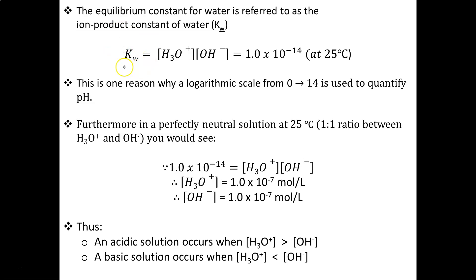Because water is so important to us, we give it its own variable, Kw, known as the ion product constant of water. Its value at 25 degrees Celsius — room temperature — is 1.0 times 10 to the power of negative 14, and this is one of the reasons why the pH scale goes from 0 to 14.